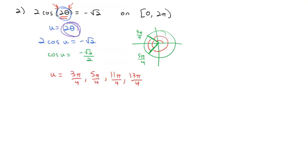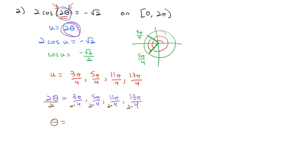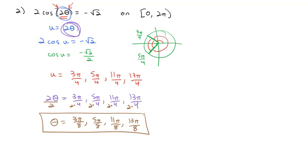Converting back, 2 theta equals 3 pi over 4, 5 pi over 4, 11 pi over 4, and 13 pi over 4. Dividing by 2 gives theta equals 3 pi over 8, 5 pi over 8, 11 pi over 8, and 13 pi over 8. All of our solutions for theta are between 0 and 2 pi.